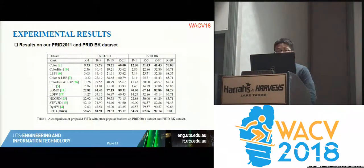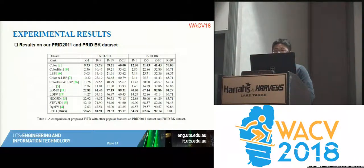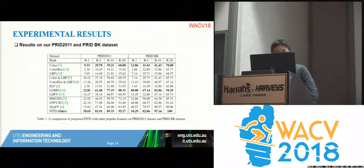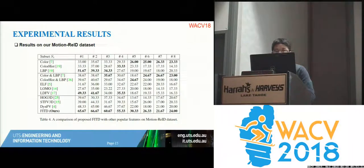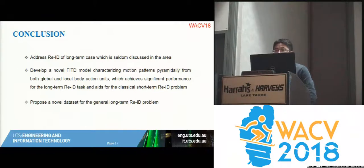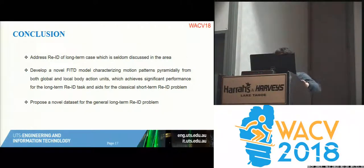For the results, in the public domain there is only one video-based person re-ID dataset called PRID, where appearance does not change. We manually selected persons with similar clothes and applied our method — our method outperforms the current best method. On our own dataset using pure motion features, we also outperform other methods. In conclusion, when trying to find the same person across different clothes, you have to use motion features. Please come to our poster to discuss further. Thank you.